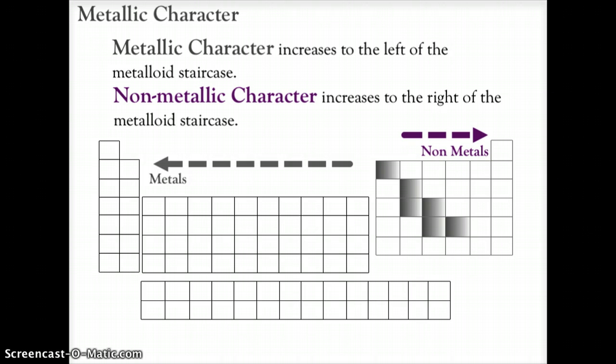Metallic character. We know that the staircase of metalloids separates the metals from the nonmetals. And as you move from the metalloids to the left, you are going to gain greater metallic character. And as you move from the metalloids to the right, you're going to gain more nonmetallic character to your elements.